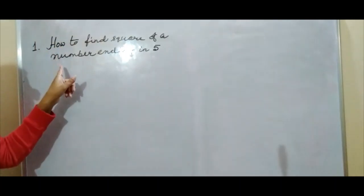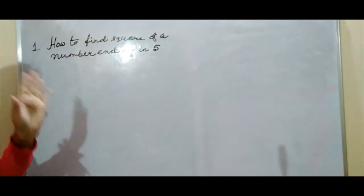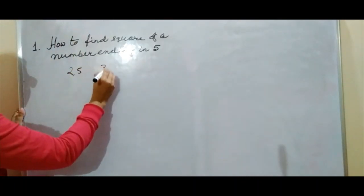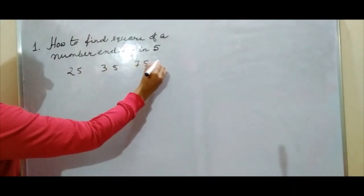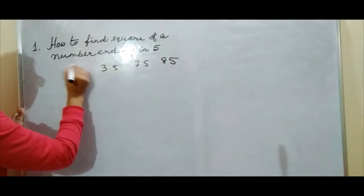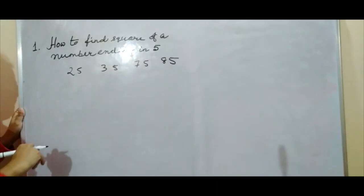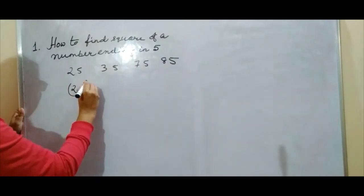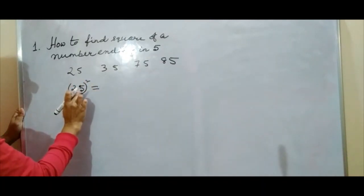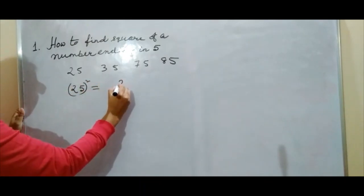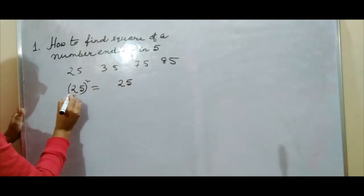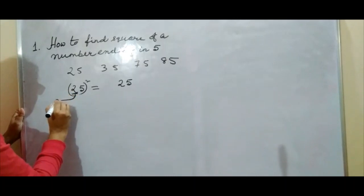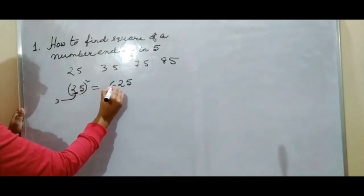Here is the first trick: how to find the square of a number ending in 5. That means any number which ends in 5 — 25, 35, 75, 85, whatever you take. For example, 25 squared: it is very simple. You write 25 at the end first. Then take the digit 2; after 2 comes 3, multiply these two numbers: 2 × 3 = 6. So the answer is 625.